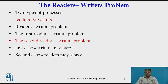If two readers access the shared data simultaneously, no adverse effects will result. But if a writer and some other process — either a reader or a writer — access the database simultaneously, then chaos may ensue. To ensure that these difficulties do not arise, we require that the writers have exclusive access to the shared database while writing. This synchronization problem is referred to as the readers-writers problem.